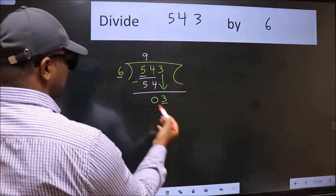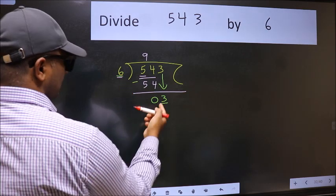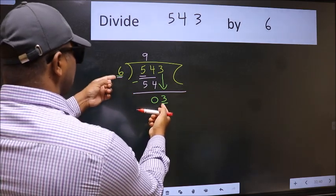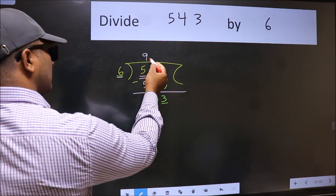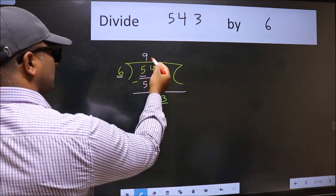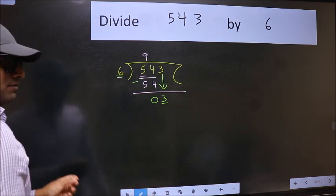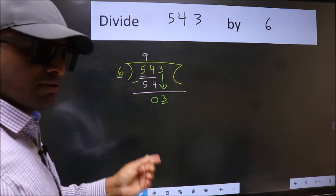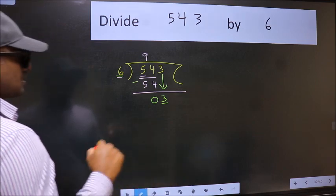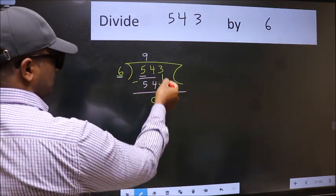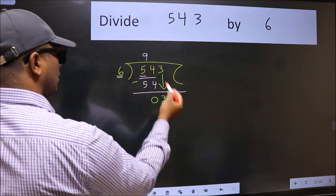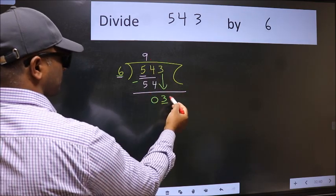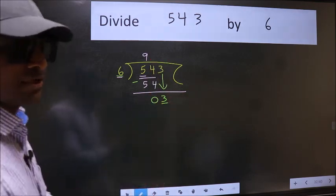Here we have 3 and here 6. 3 is smaller than 6. So what many do is they directly put dot, take 0. Which is wrong. Why is it wrong? Because just now you brought this number down, and in the same step, you want to put dot, take 0. Which is wrong.